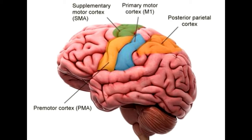Sulci (singular: sulcus) refer to the troughs or crevices that form between folds. They are often described as valleys appearing on the surface of the brain.